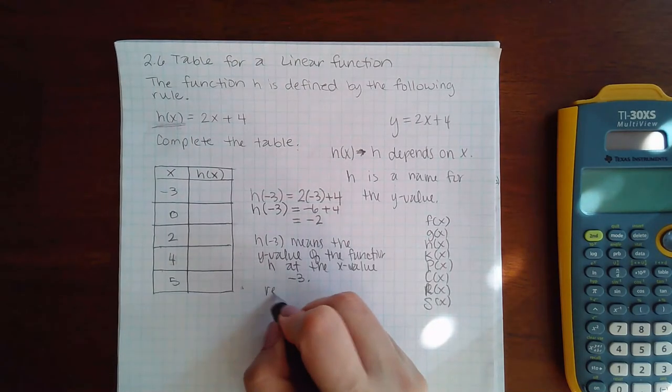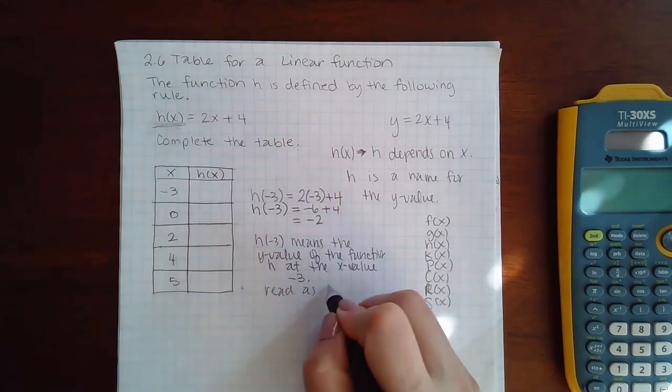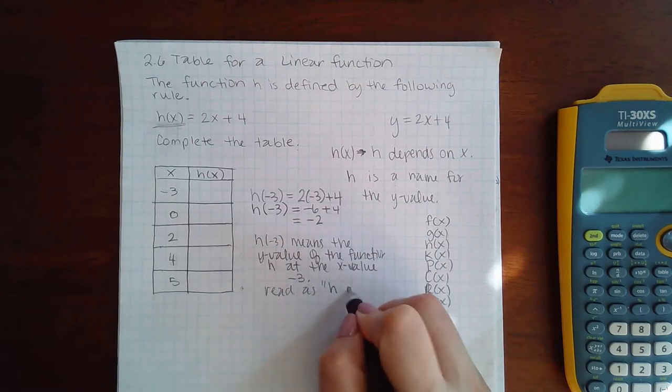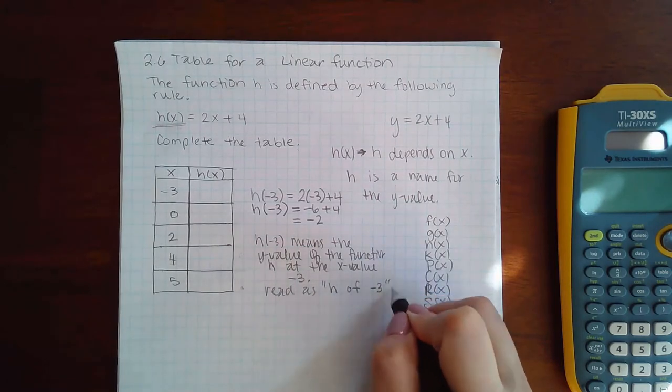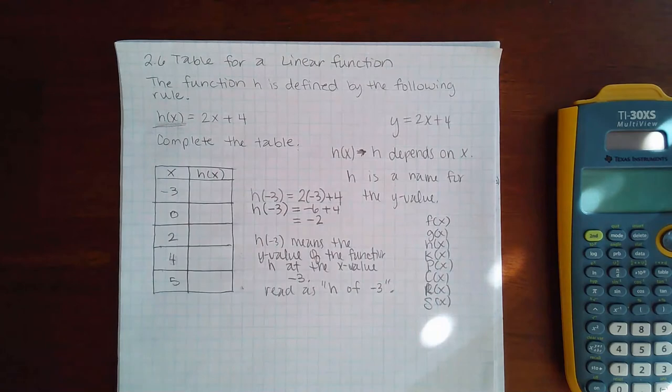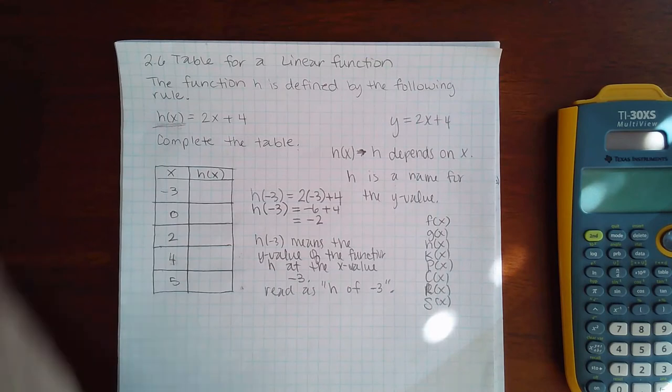And it's read as h of negative 3, which is important because a lot of people will start to try to divide both sides by negative 3 thinking that h is multiplied by negative 3, and it is not. It is the whole new kind of notation that we're going to have to get familiar with real quick because the remainder of the course is going to be using this function notation.